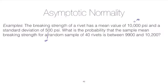What the question is asking for is the probability that a sample mean breaking strength, for a random sample of 40 rivets (so sample size N equals 40), is between two different quantities: 9,900 and 10,200 psi.